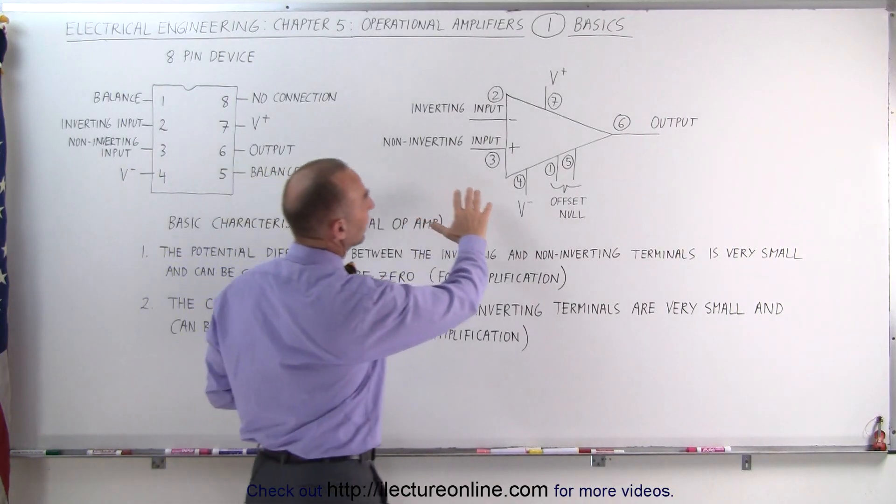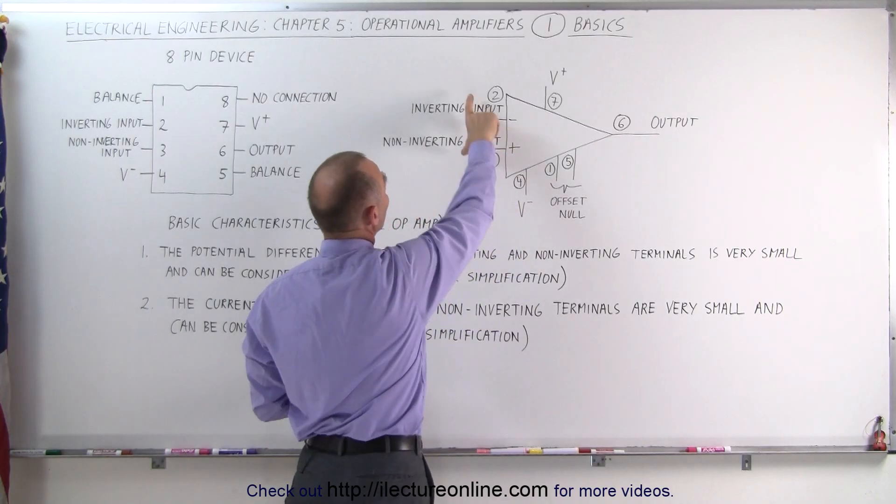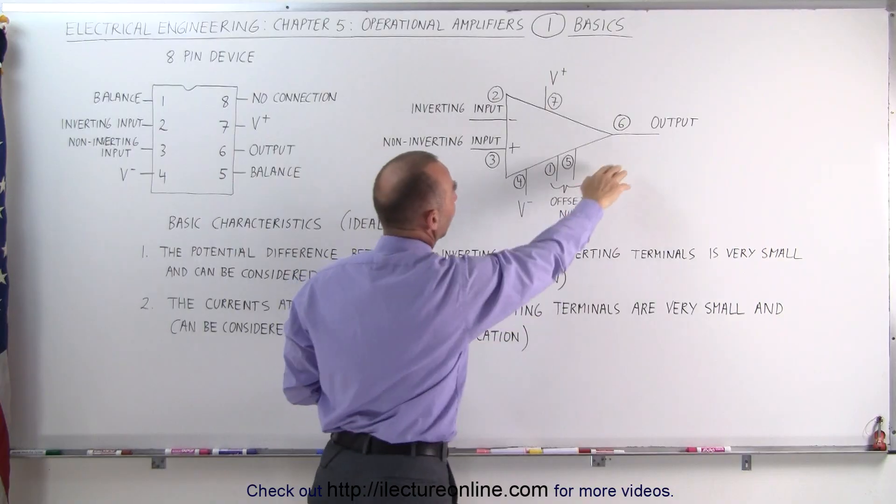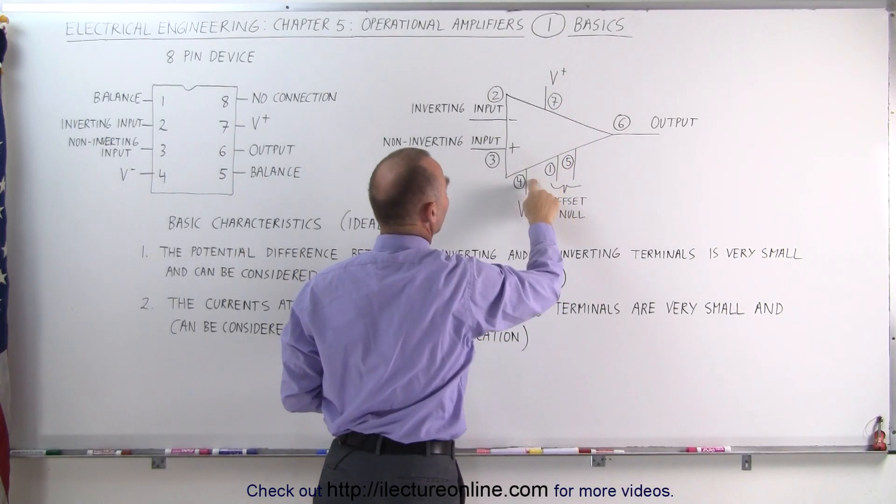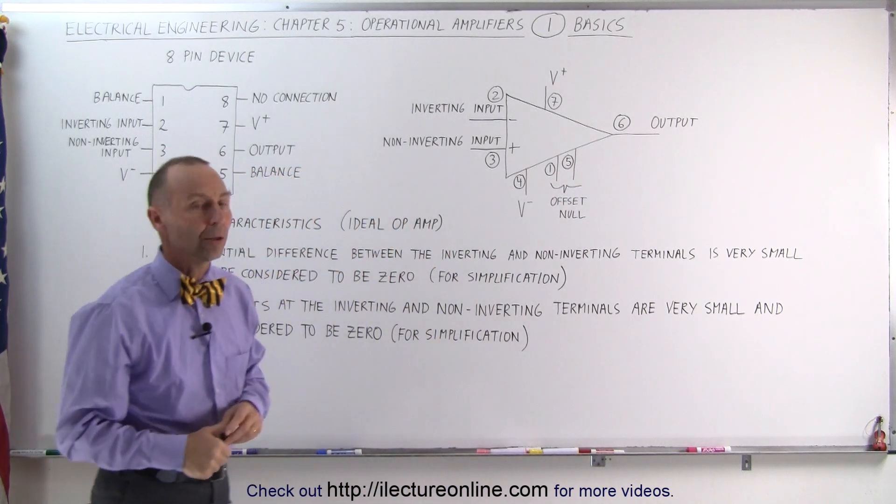Notice that here's the schematic of the 7 pins, obviously the 8 pin is not included. Notice pin 2 and 3 are what we call the inverting and non-inverting inputs. Here we have the output, and then the voltage, the plus and minus voltage applied, and then we'll talk about these two pins later, the offset and the null pin.